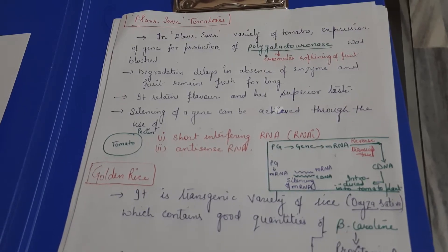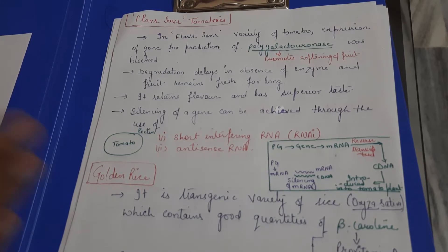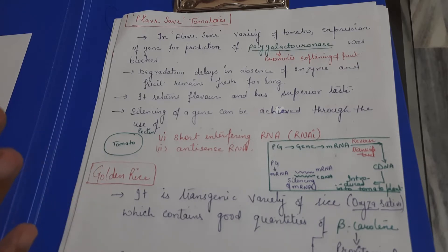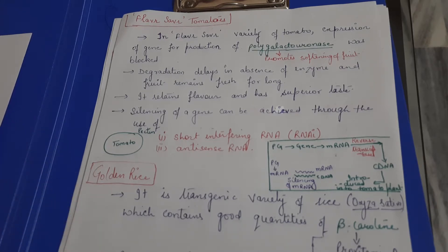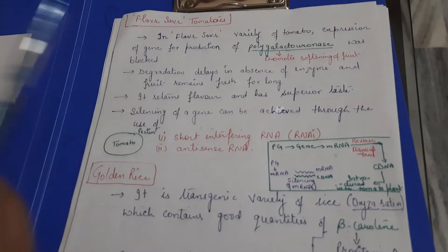Students, we are going to begin with another example of biotechnology application in agriculture. We have already discussed insect resistance plants, taking the example of Bt cotton, and pest resistance plants where scientists protected the tobacco plant from the nematode Meloidogyne incognita. Now we are going to study an example of tomato.